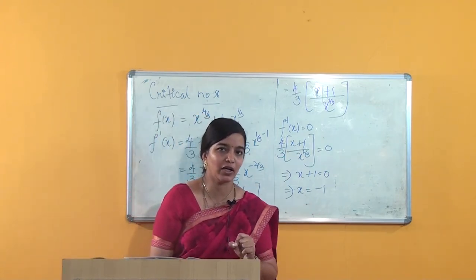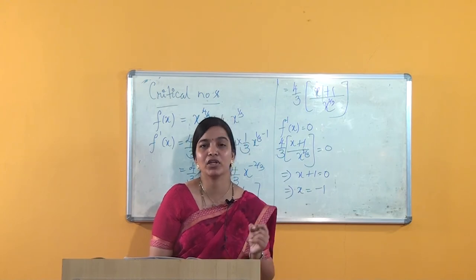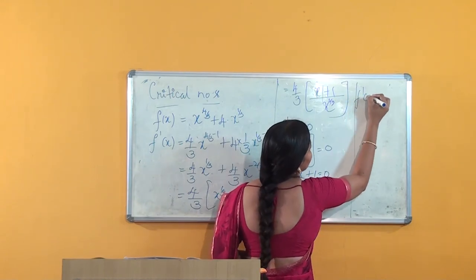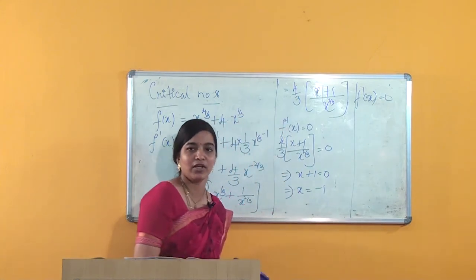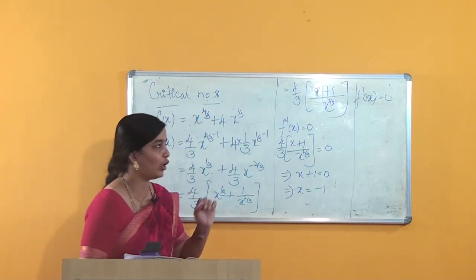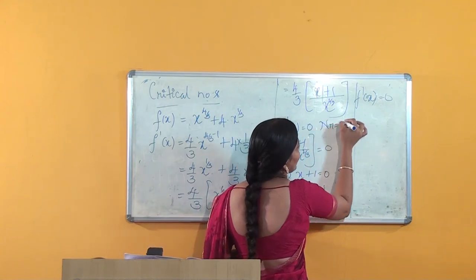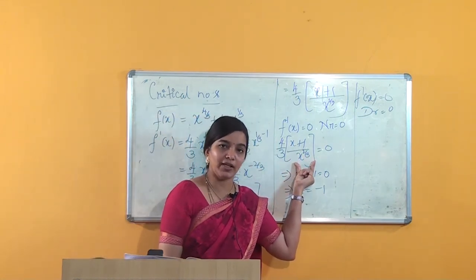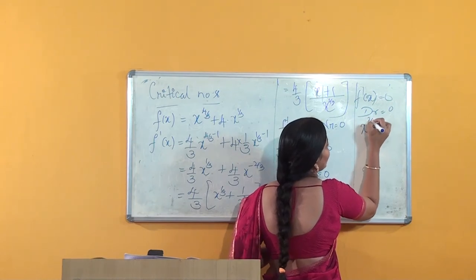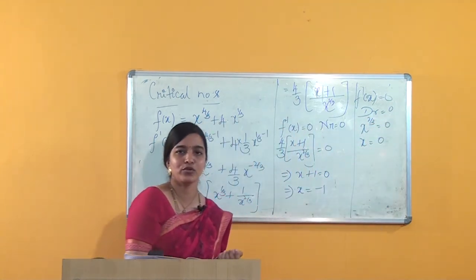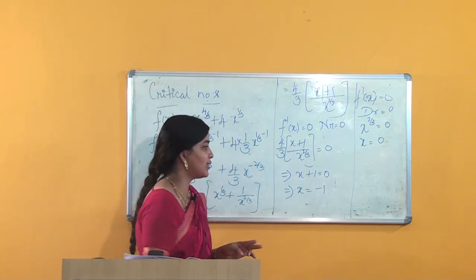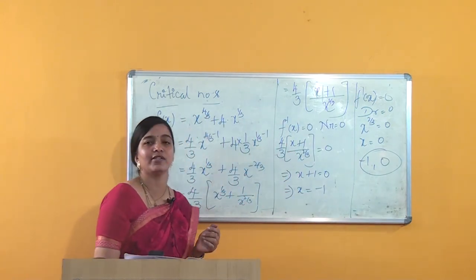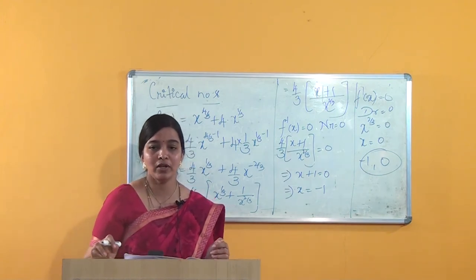Now we find one more critical point — when the derivative of the function does not exist, i.e., f'(x) does not exist, meaning the denominator equals 0. When x^(2/3) = 0, that is x = 0. So we obtain two critical points: x = −1 and x = 0. These are the critical points of f(x) = x^(4/3) + 4·x^(1/3).